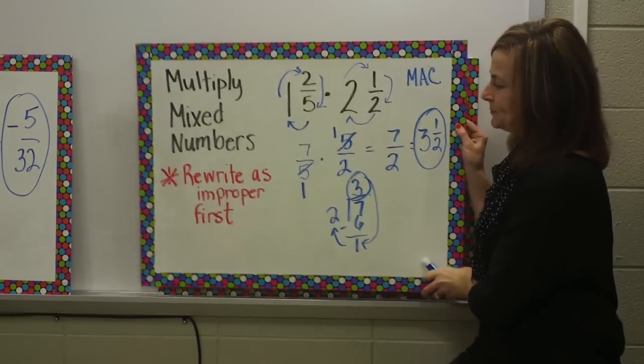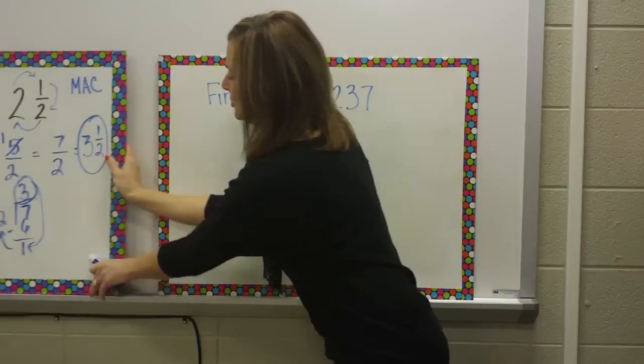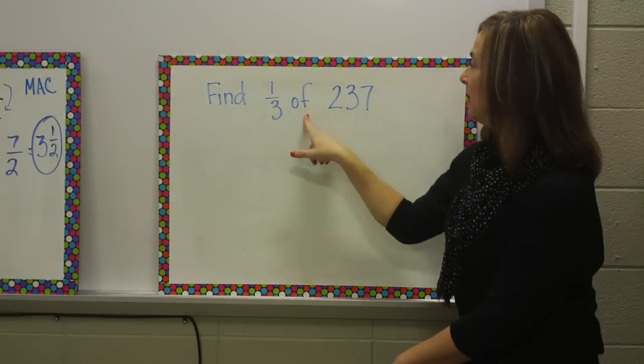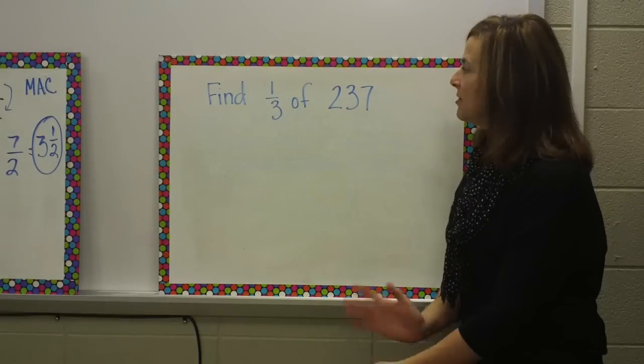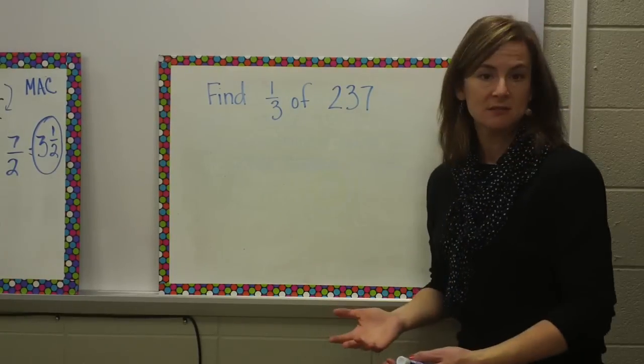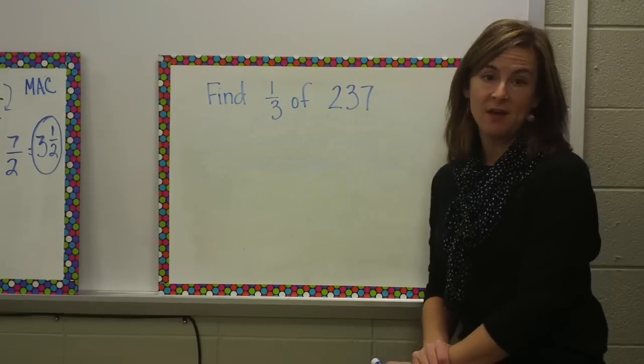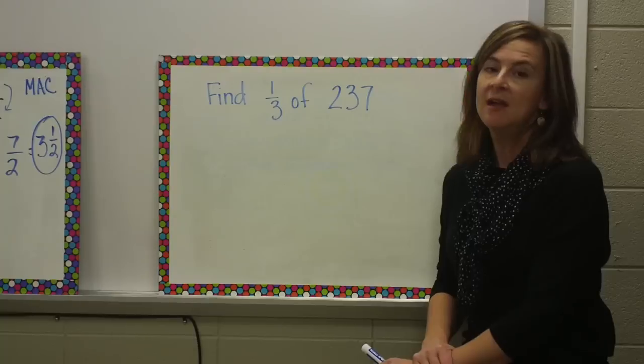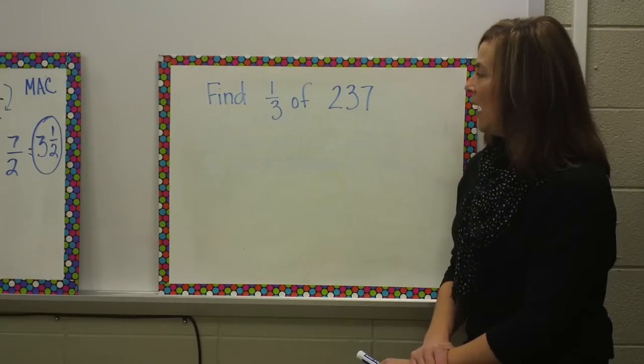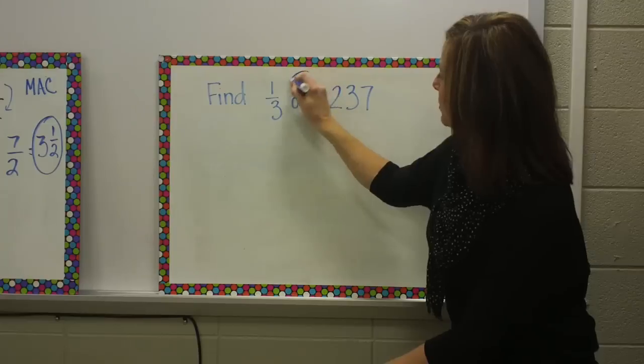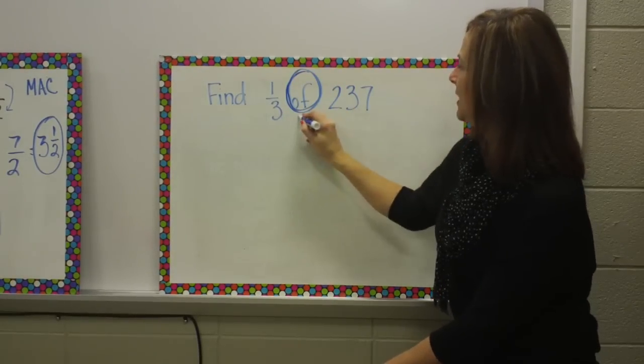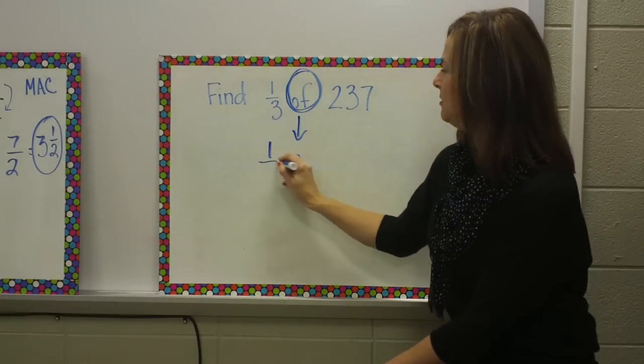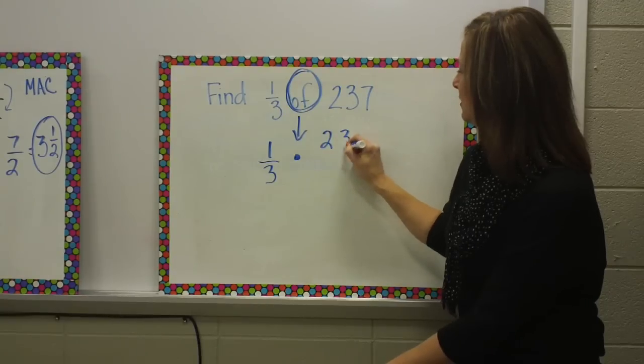The last example I want to show you looks at multiplication in a bit of a different way. Let's say I'm asking you to find one third of a number. Let's say we have 237 seventh graders in our school, and one third of them gets picked up by their parents at the end of the day. We want to know how many students are getting picked up by their parents. In math, of means to multiply. Make sure that you copy this down. Of means to multiply. I'm finding one third times 237.